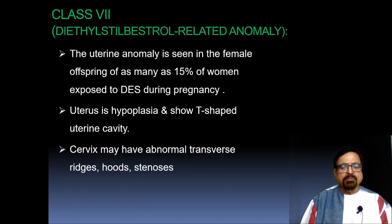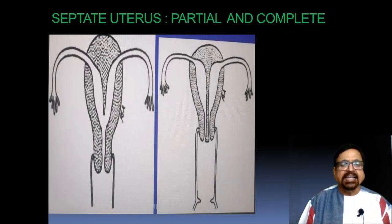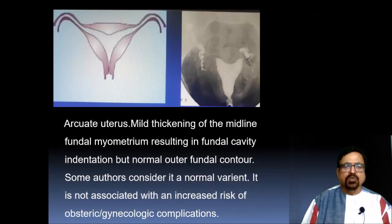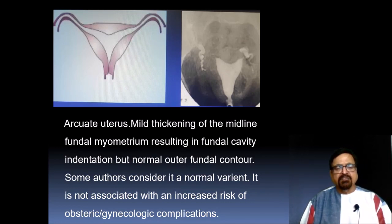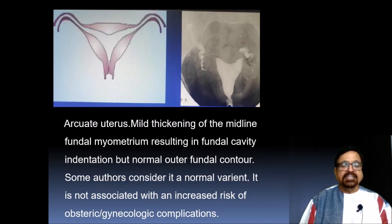This diagram shows both partial and complete septate uterus. The arcuate uterus shows mild thickening of the midline fundal myometrium, resulting in fundal cavity indentation but with a normal outer fundal contour. Some authors consider this a normal variant; it is not associated with an increased risk of obstetric or gynecological complications.